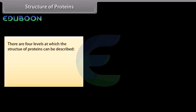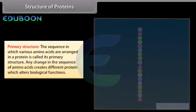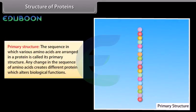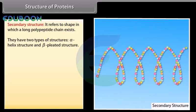The structures of proteins are quite complex. There are four levels at which the structure of proteins can be described: primary, secondary, tertiary and quaternary structures. Primary structure: the sequence in which various amino acids are arranged in a protein is called its primary structure. Any change in the sequence of amino acids creates a different protein, which alters biological functions. Secondary structure: it refers to the shape in which a long polypeptide chain exists, with two types of structures: alpha helix structure and beta pleated structure.